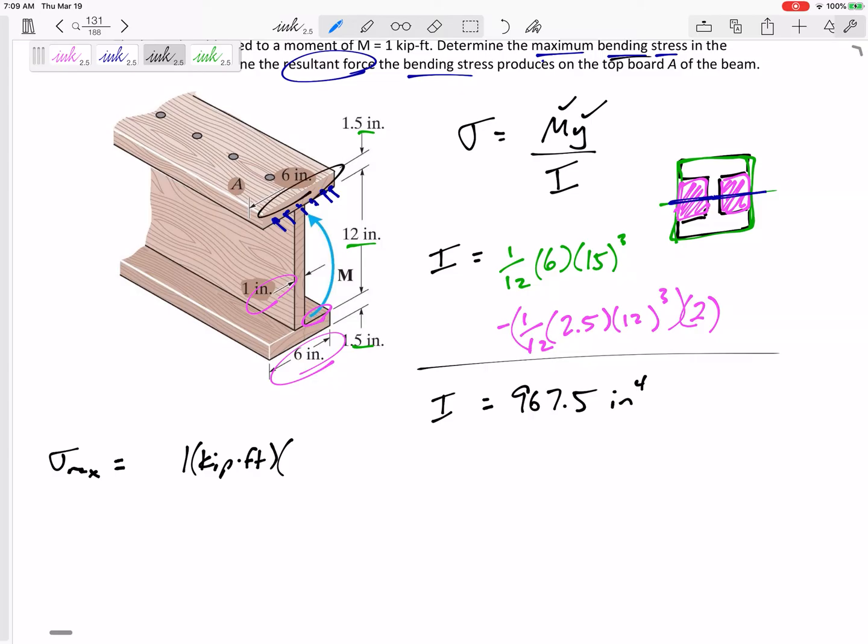The maximum would occur either at the very top or the very bottom. It's symmetric so I don't have to calculate both of them. I know that the top is exactly the same as the bottom. Just one is in compression, one is in tension. So this, let's see, it'd be 6 inches to there and another 1.5. So 7.5 inches.